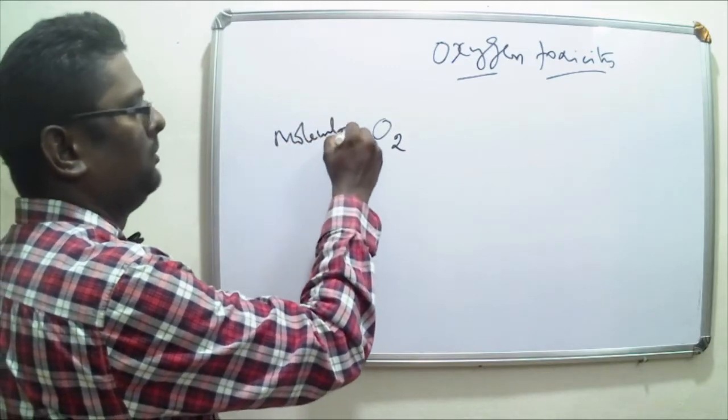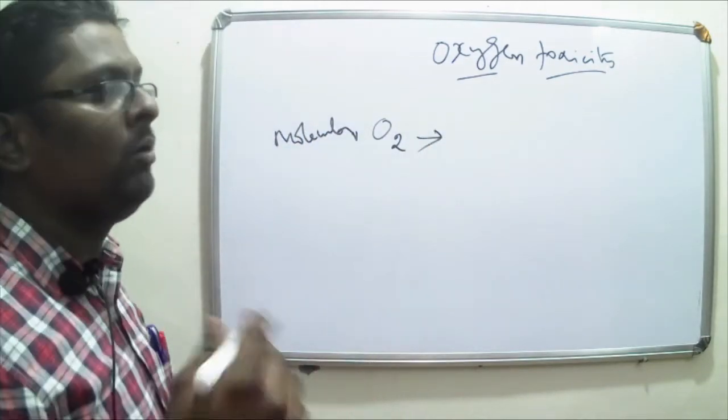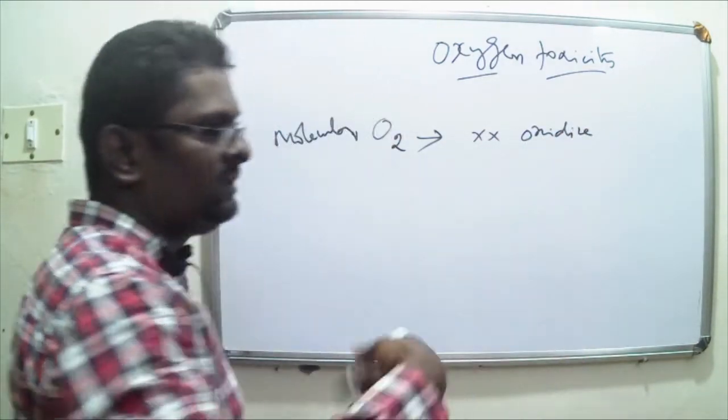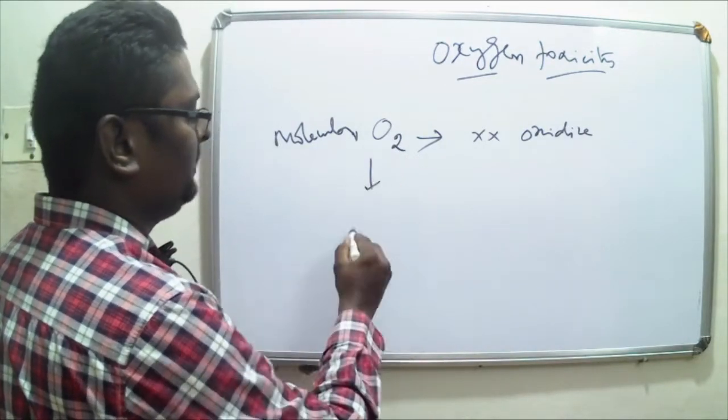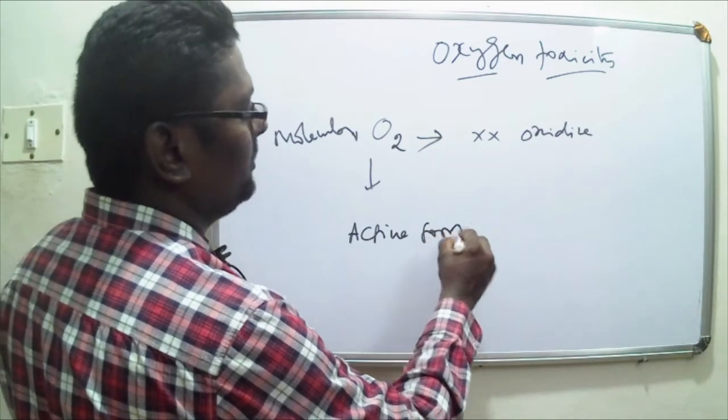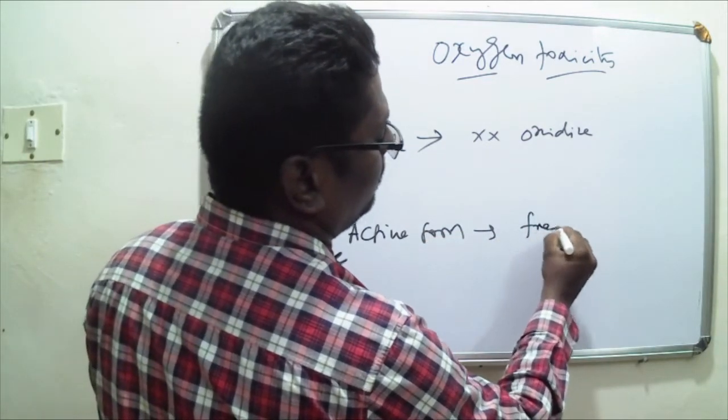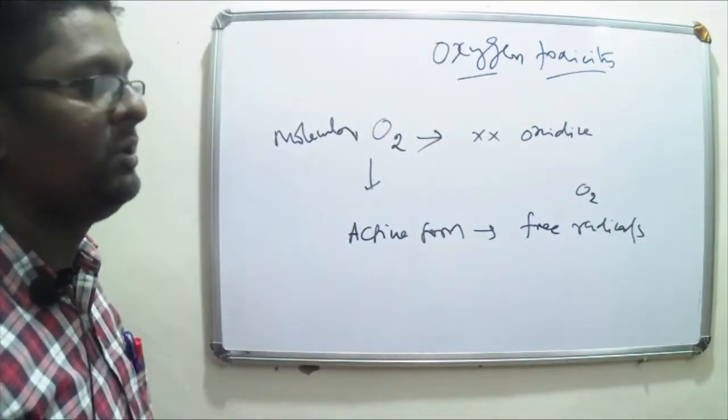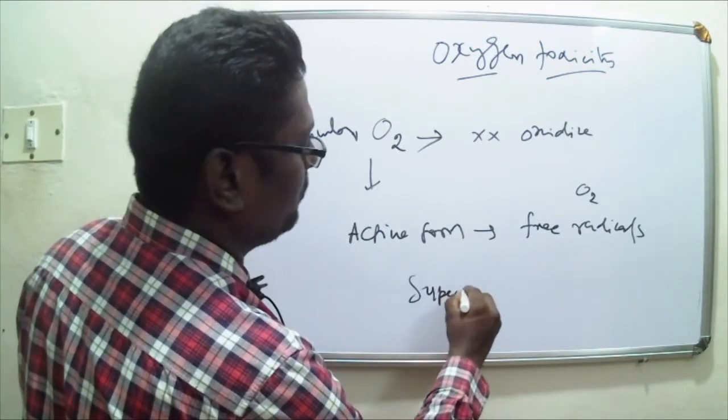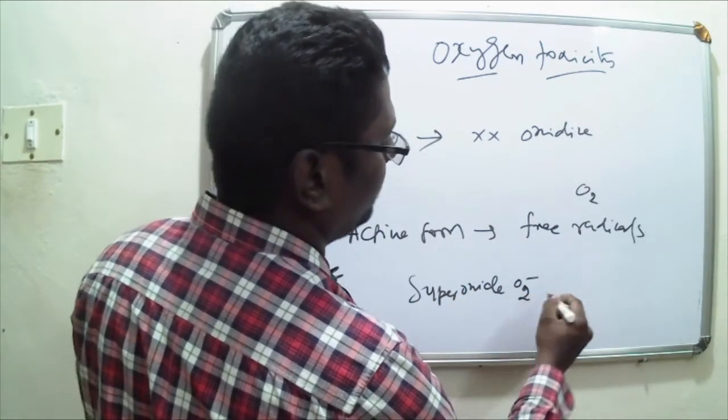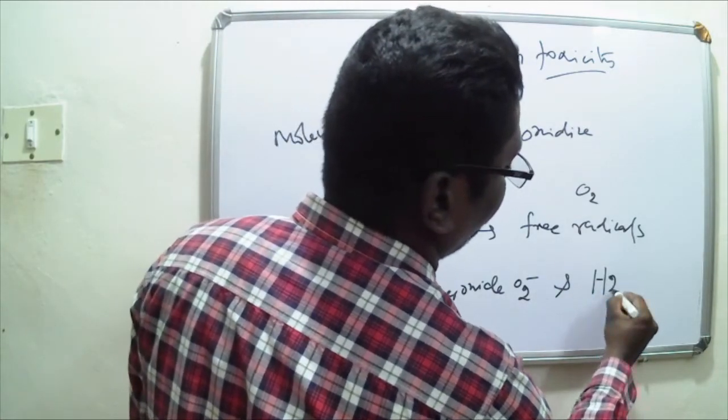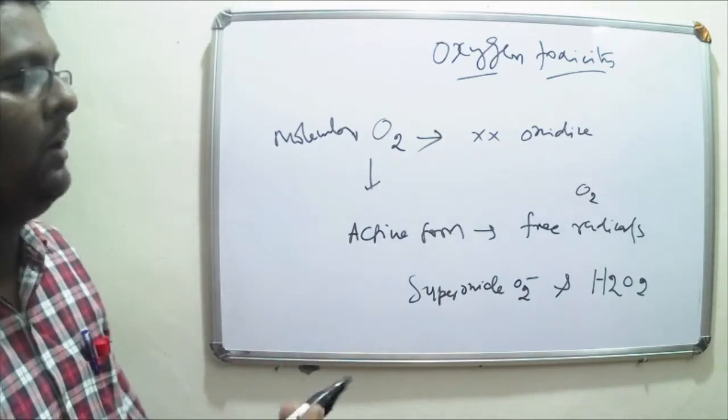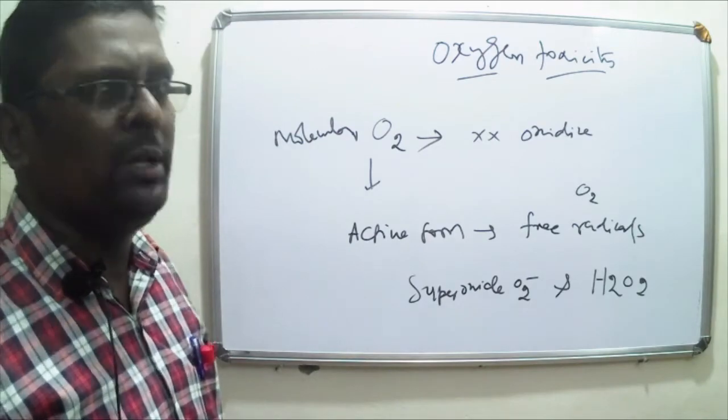Molecular oxygen does not ordinarily oxidize chemical compounds. Instead, it must be converted to its active form, which we call free radicals - oxygen free radicals. Some of the most important ones include superoxide free radical and peroxide free radical in the form of hydrogen peroxide. These two are important oxygen free radicals which bring about cellular damage.